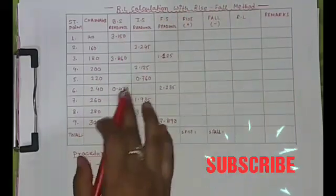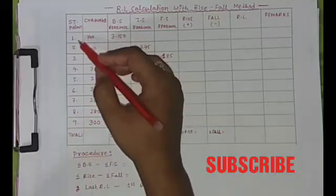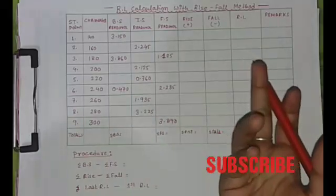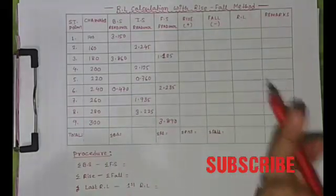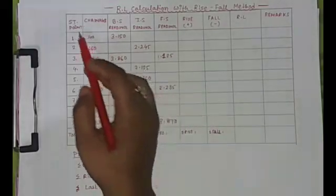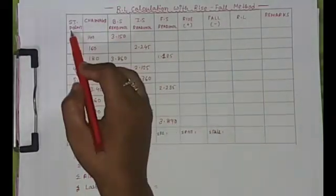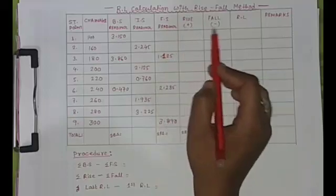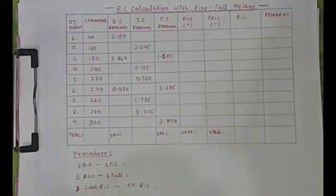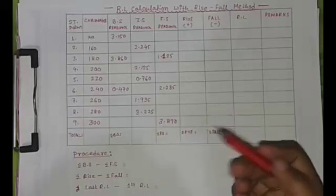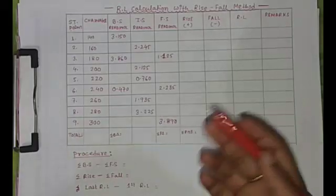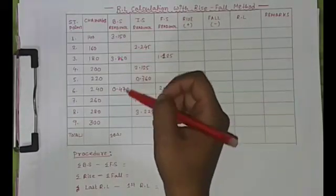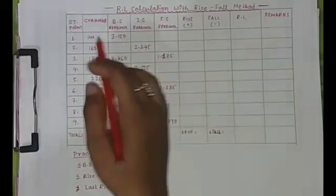For this method, I am creating a table using field data collected from an auto level instrument — you can use a dumpy level also. In this table I have: station point, change point, backsight reading, intermediate sight reading, foresight reading, rise, fall, RL, and remarks.